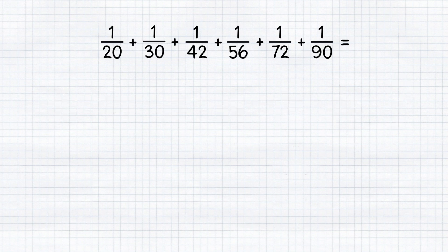Let's take a closer look at the denominators of the given fractions. The first that catches your eye is that the pair 20 and 30 might have something in common, as well as the pair 42 and 56, and 72 and 90.